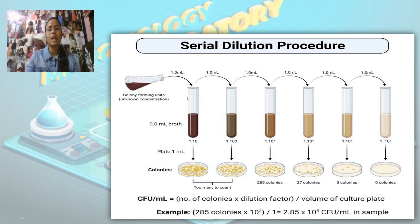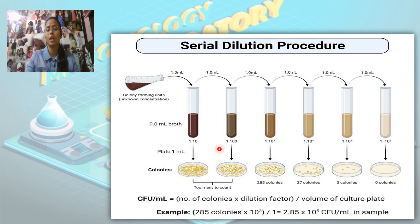For example, we can take 9 mL broth as a diluent and 1 mL for the sample preparation. We take a sample whose concentration is unknown, and then we prepare concentrations of 10 to the power minus 1, 10 to the power minus 2, 10 to the power minus 3, and so on, up to as many dilutions as we need.